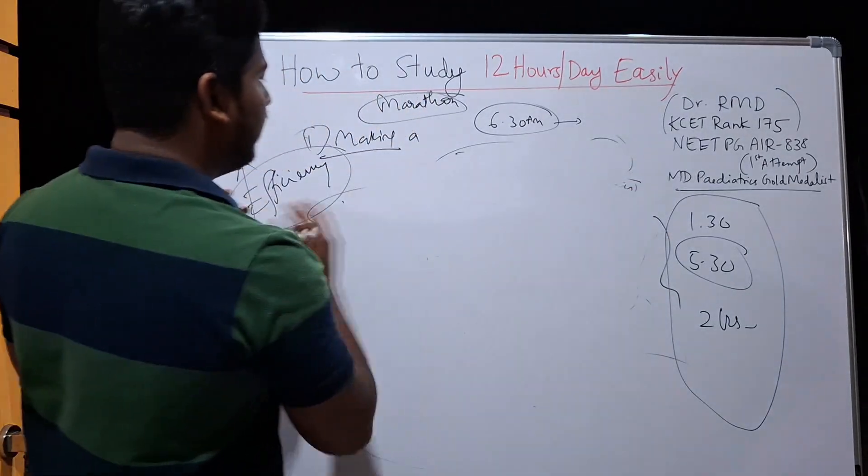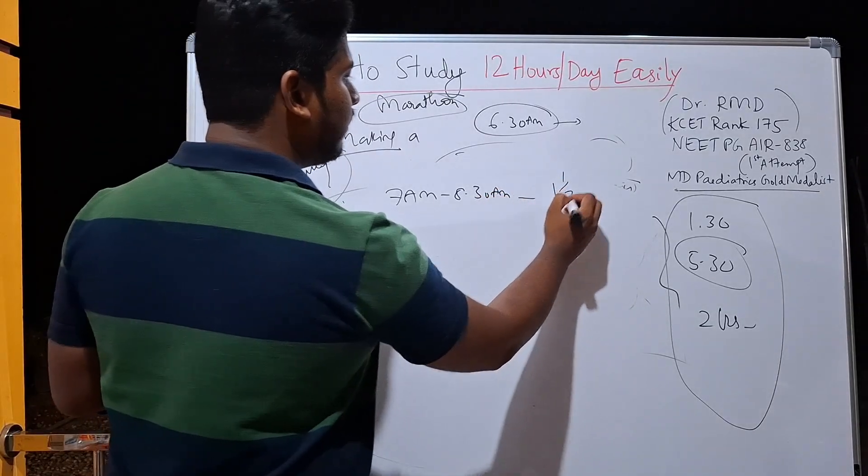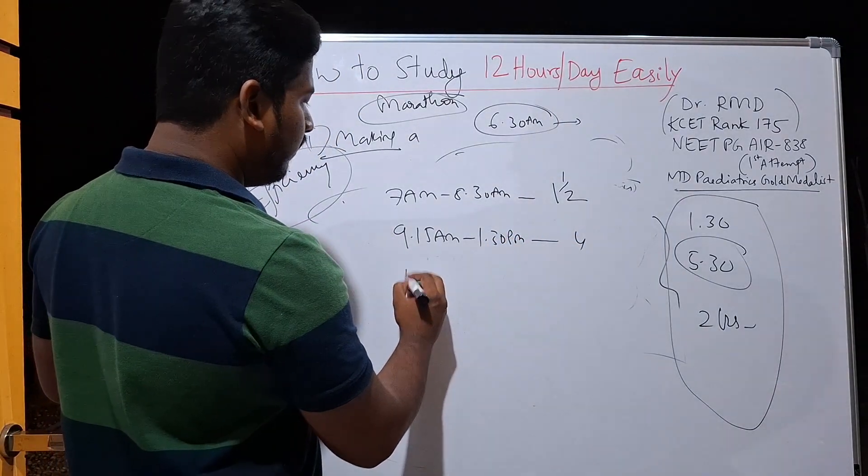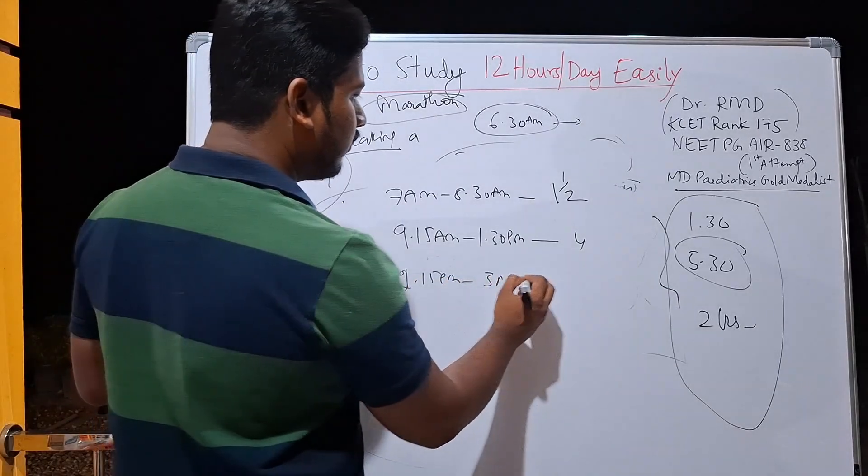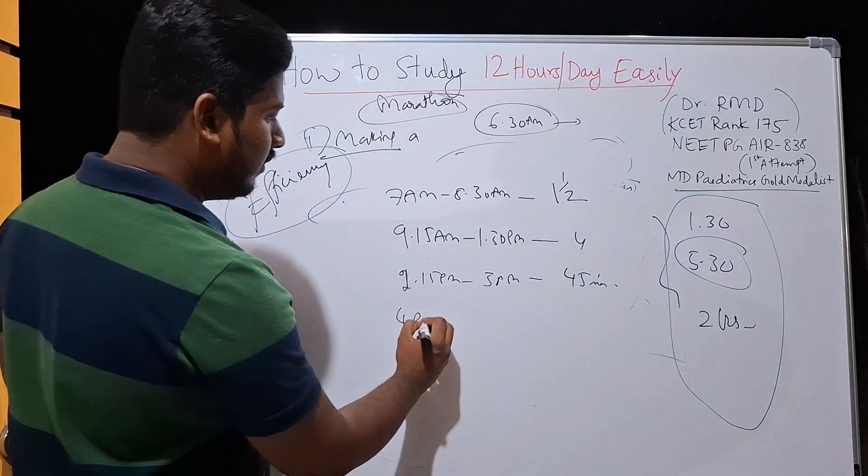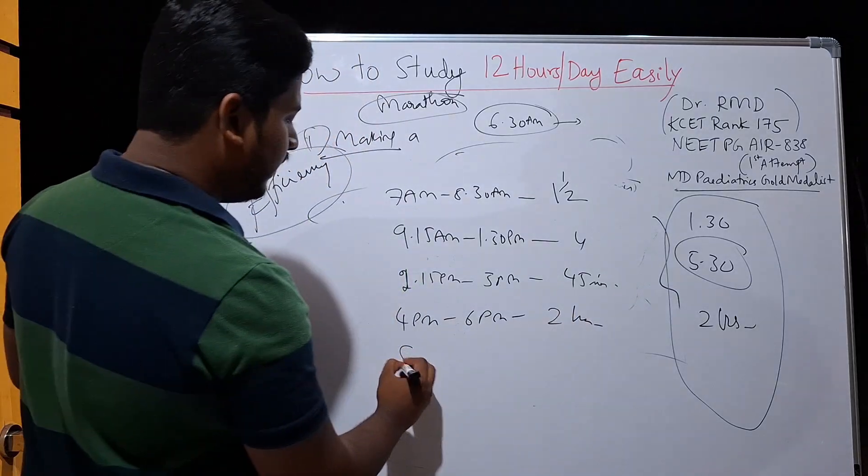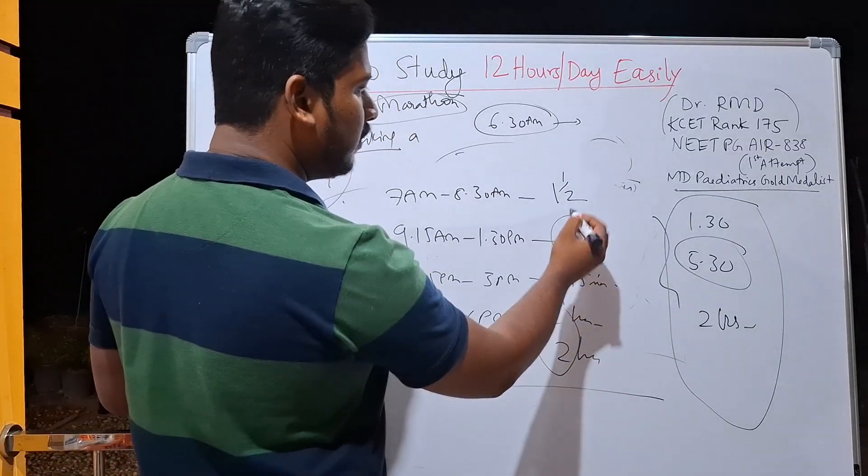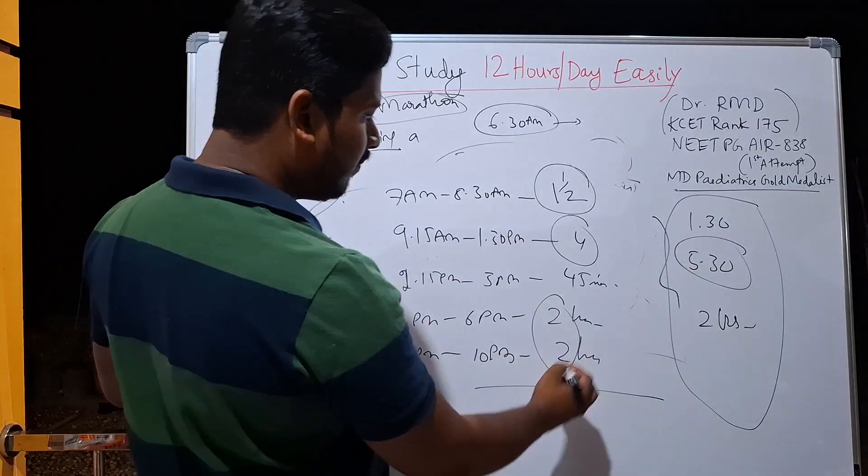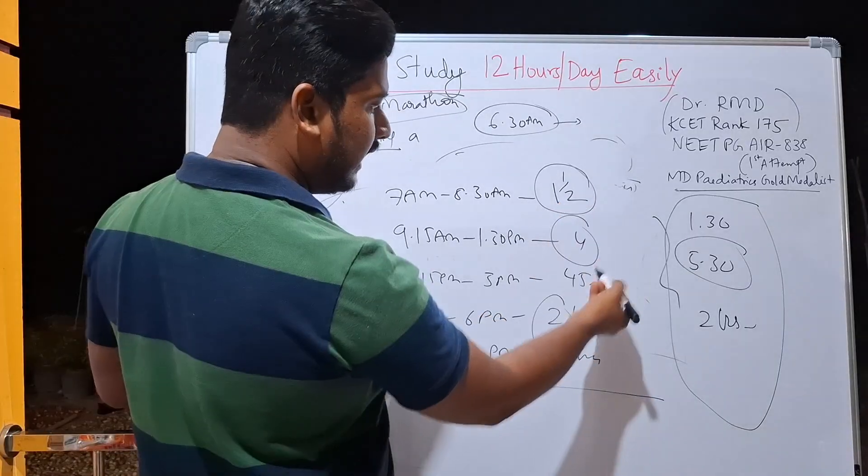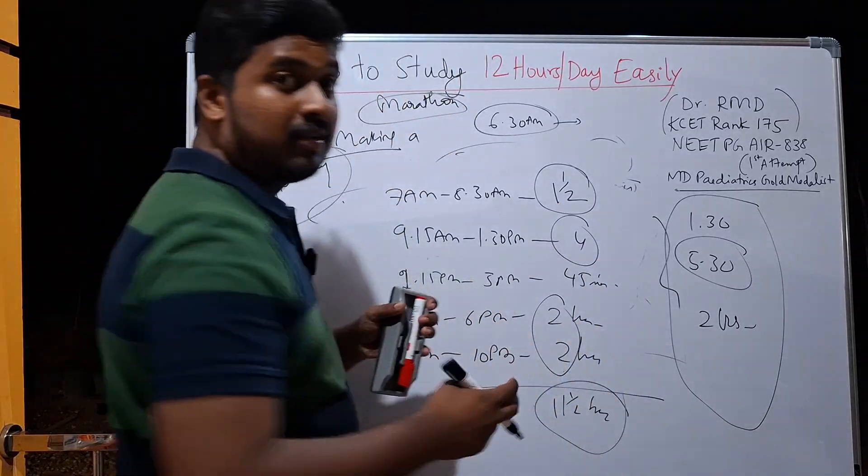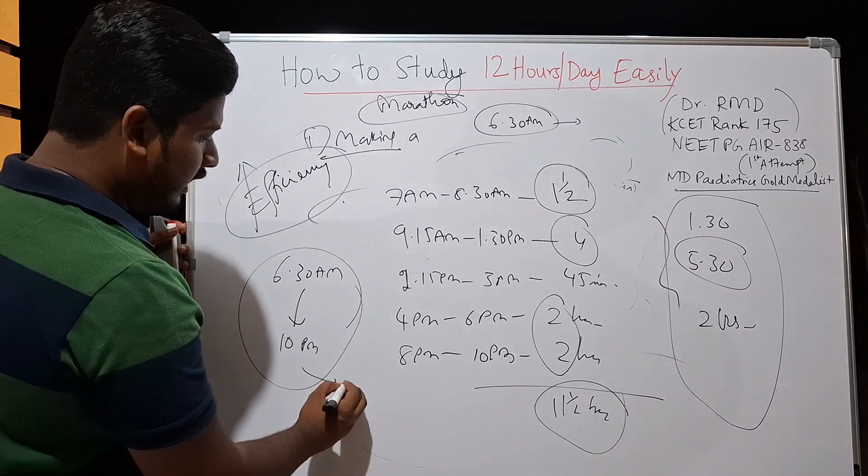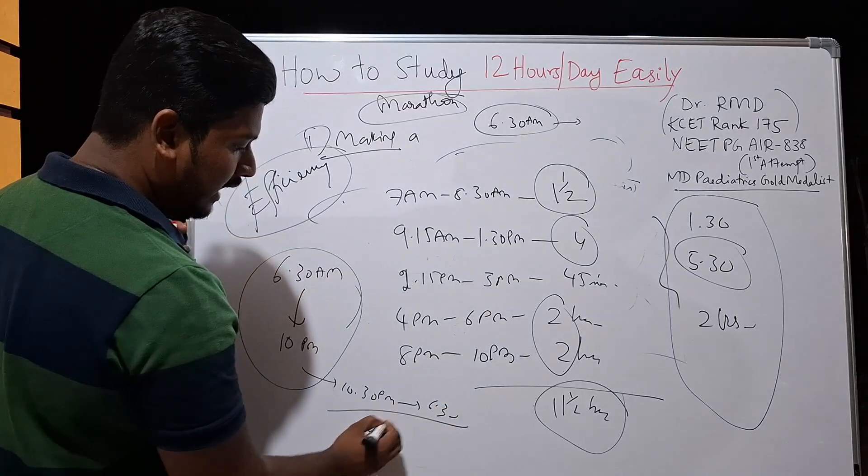So morning you had dedicated 7 a.m. till 8:30 a.m., that is 1.5 hour. Then you dedicated from 9:15 a.m. to 1:30 p.m., which is almost 4 hours. Then you dedicated 2:15 p.m. to 3 p.m., which was 45 minutes. Then you dedicated 4 p.m. to 6 p.m., which was 2 hours. And then 8 p.m. to 10 p.m., which was 2 hours. So in total you have 2 plus 2, that is 4, 4 plus 4 is 8, 8 and a half. That is total 2 plus 2 plus 4, that is 8, 8 and 9 and a half, almost equal to 11 and a half hours. But what is the total duration of study? From 6:30 a.m. till 10 p.m. You will rest at 10:30 p.m. and you will wake up next day morning at 6:30 a.m. so that you have total 8 hours of sleep.